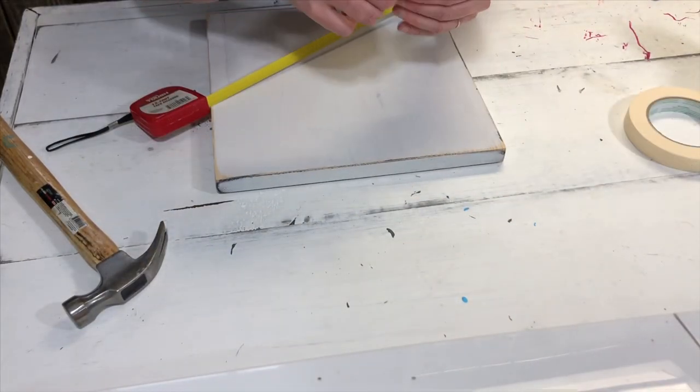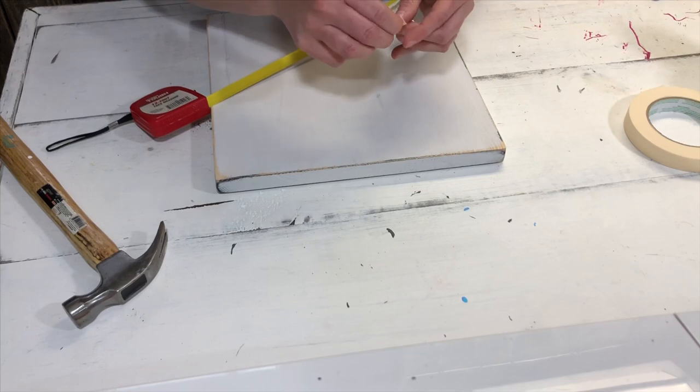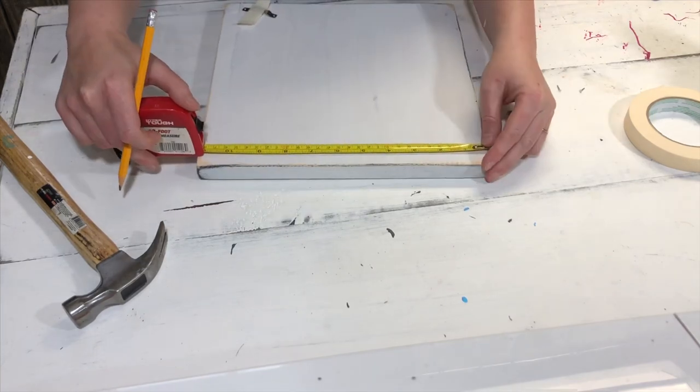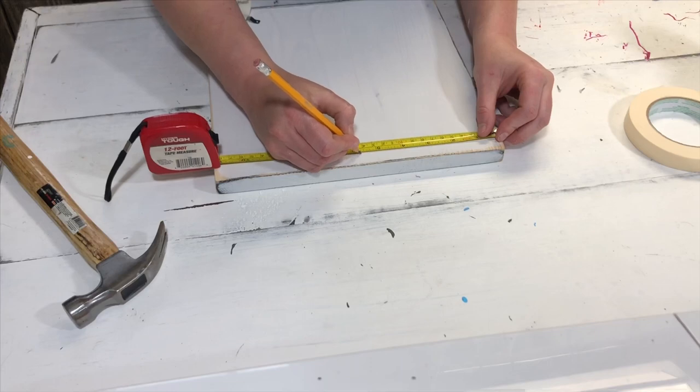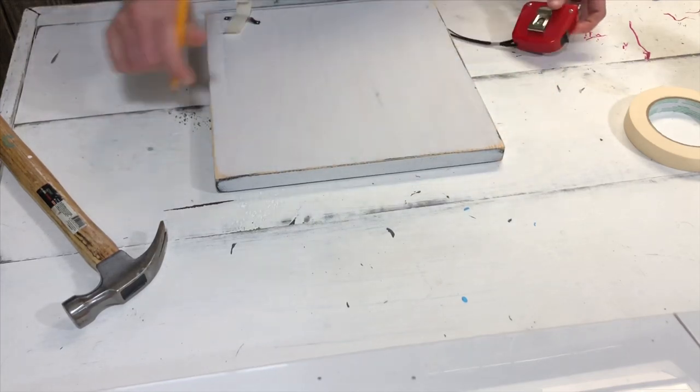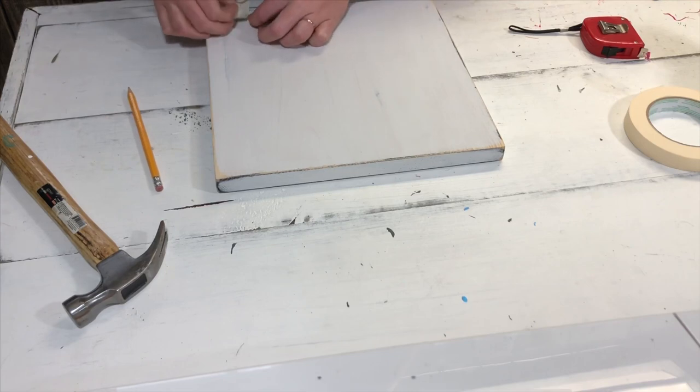After you've flipped your sign over, place a piece of masking tape on your hanging hardware and then measure out to find the exact middle of your sign. Make a mark, just a really light mark with your pencil, and then place your sawtooth hanger right over that mark and make sure that it's perfectly even.